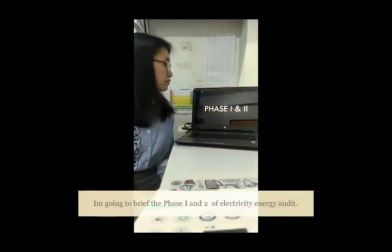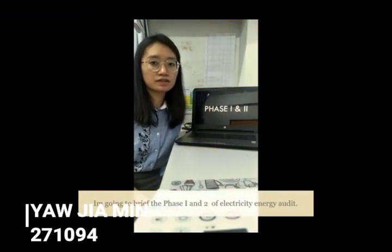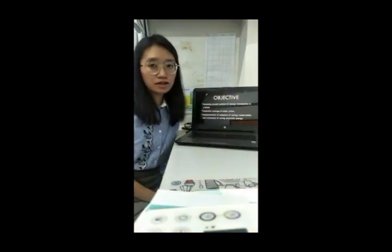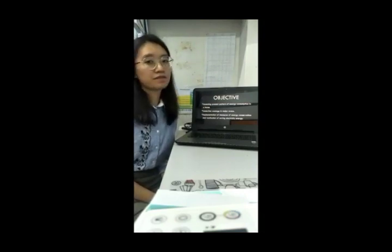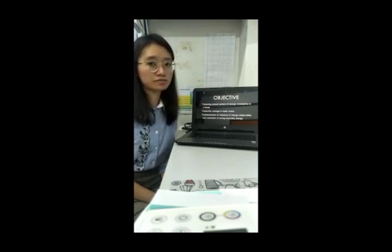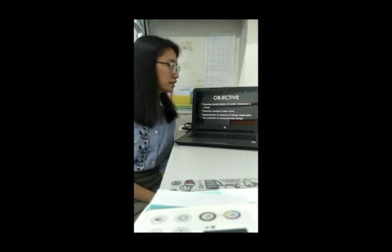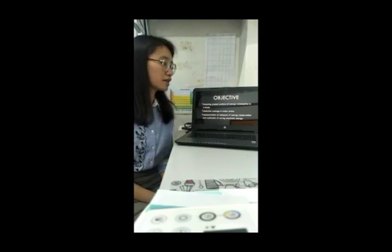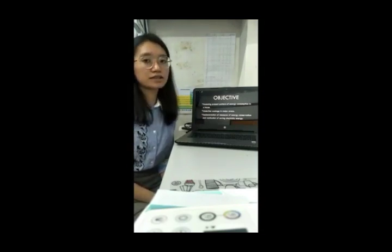I'm going to brief about Phase 1 and Phase 2 in this Electricity Energy Audit research. In Phase 1, there are three main objectives. The first objective is assessing the present pattern of energy consumption in your house. The second objective is identifying wastage in major areas. The third objective is implementation of energy conservation measures and realisation of electricity energy savings.